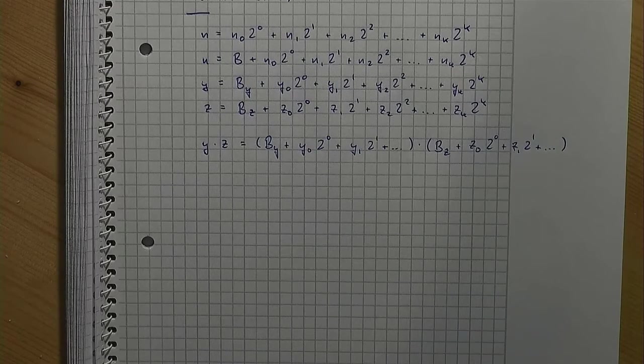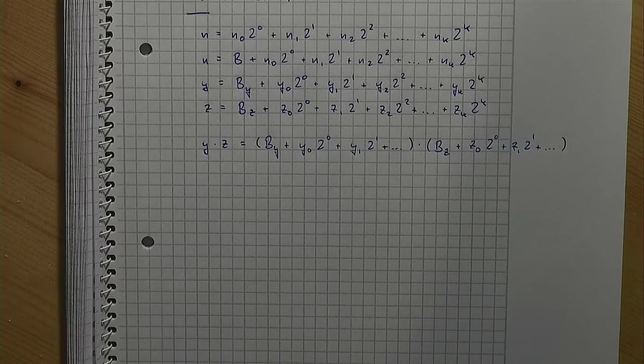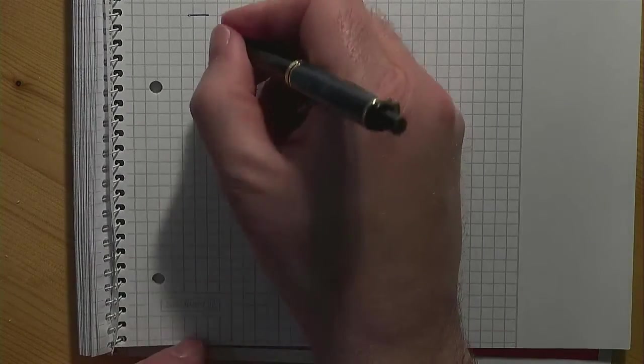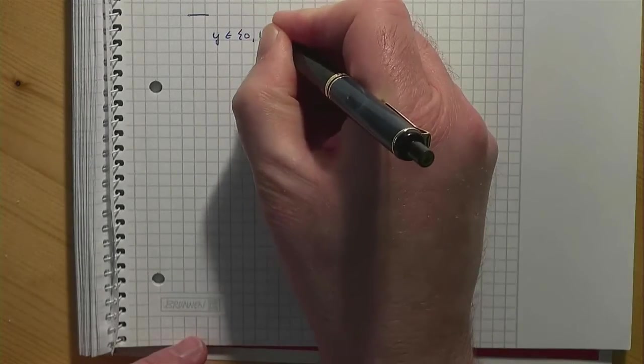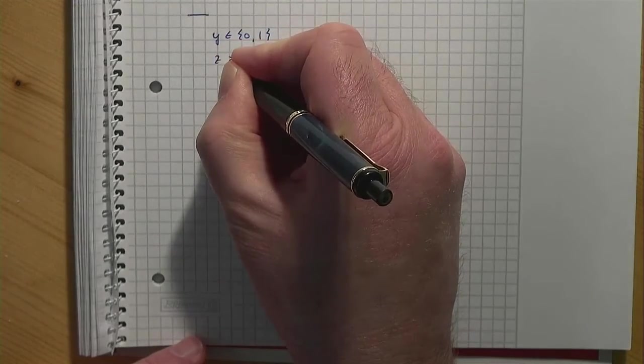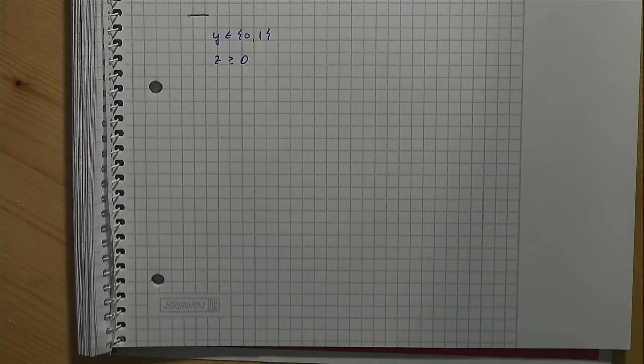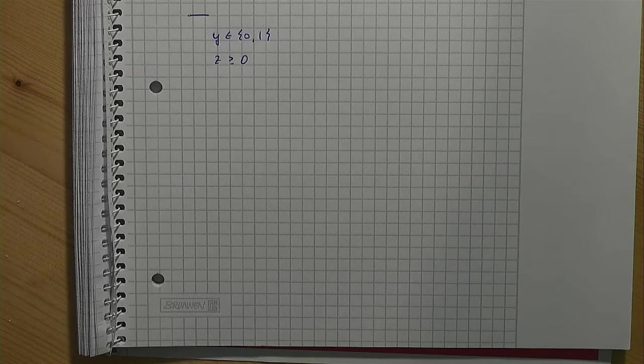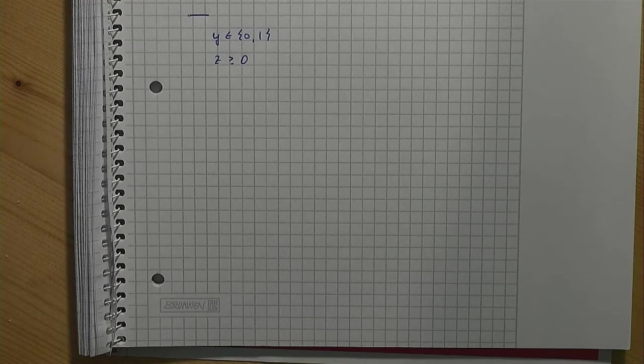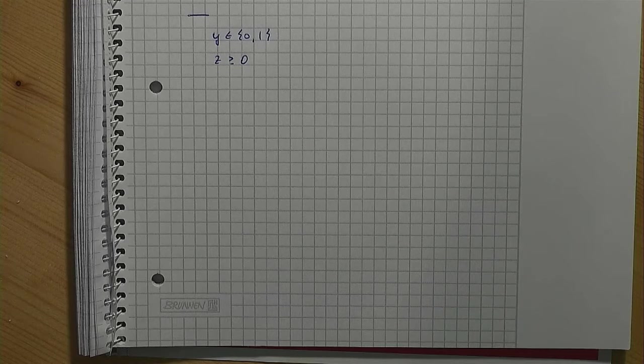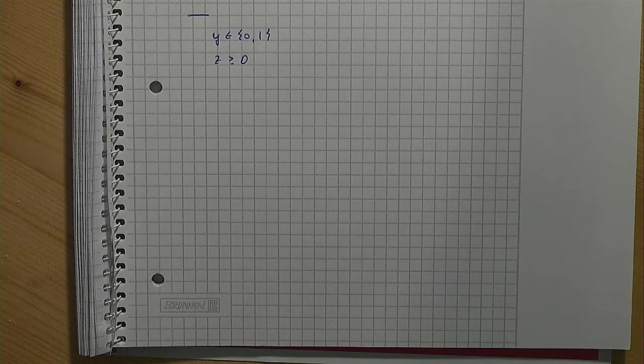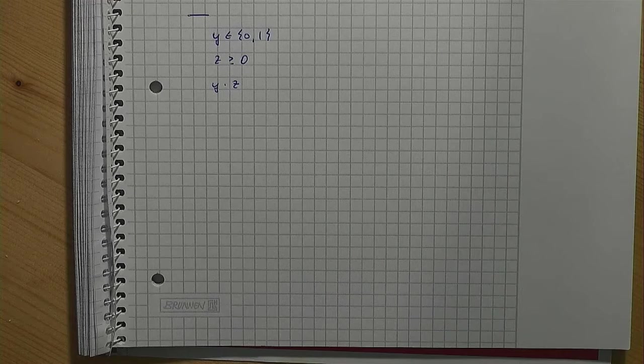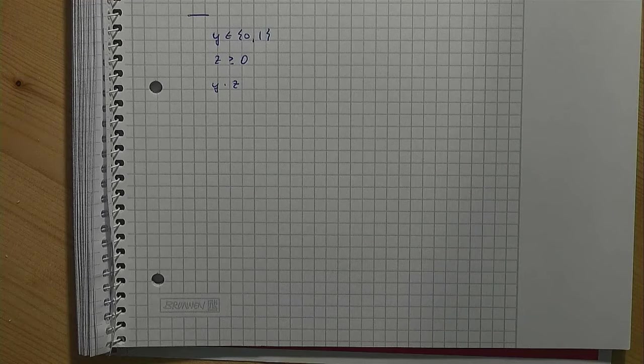Let's now turn towards a situation where we have a binary decision variable y and a real value decision variable z. Note that a non-negative variable z is without loss of generality as shown in a previous video. Recall that any real valued variable can be replaced by two non-negative real valued variables if necessary. Again, we are interested in the product of these two variables. Since the result is a real value, it's straightforward to introduce a real valued decision variable x to replace the product.